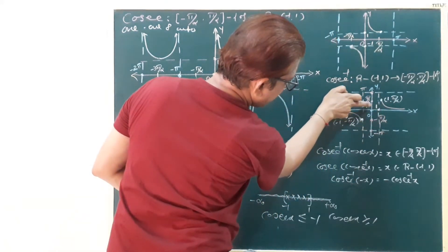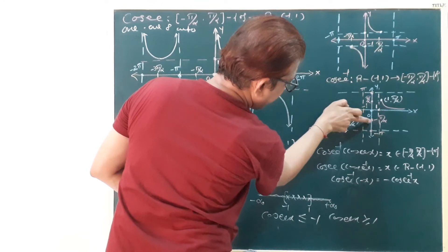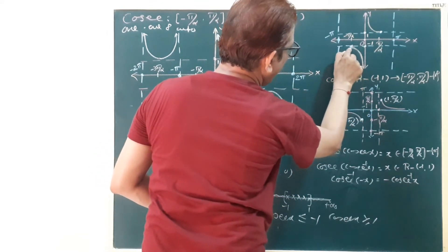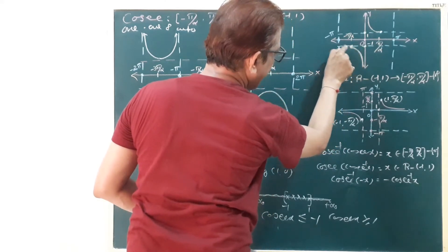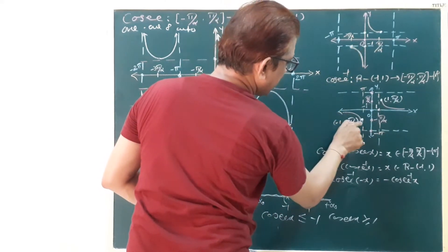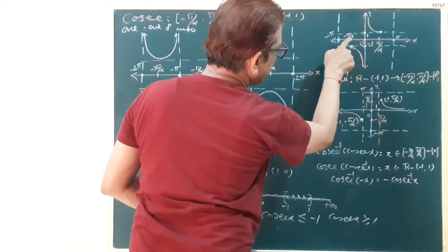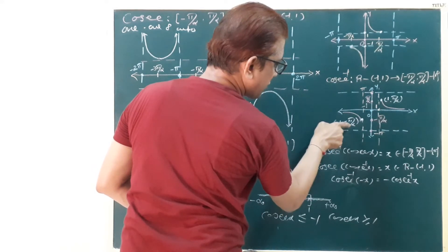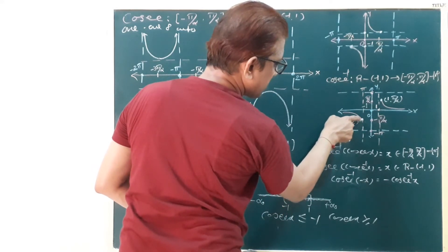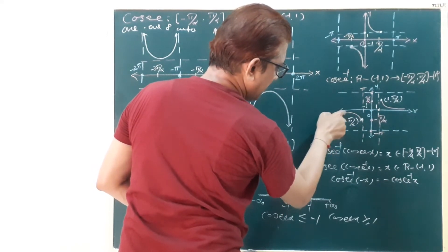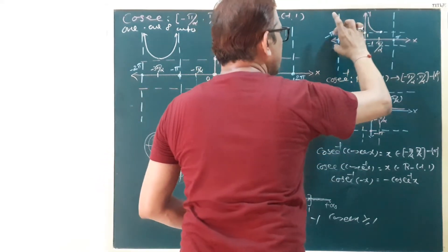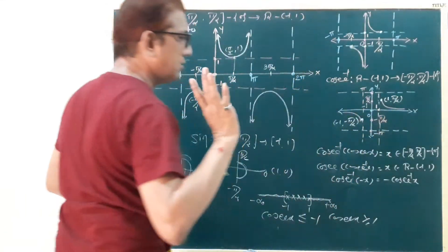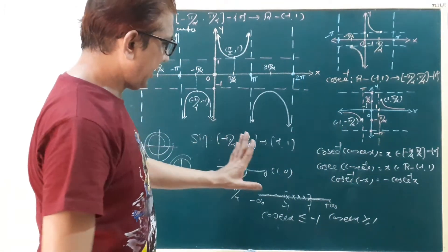Between minus pi by 2 to pi by 2: the point (minus pi by 2, minus 1) is now in the third quadrant as (minus 1, minus pi by 2). The x-axis value is minus 1 and y-axis is minus pi by 2. These two horizontal lines at 1 and minus 1 become two vertical lines at 1 and minus 1 for the inverse graph.